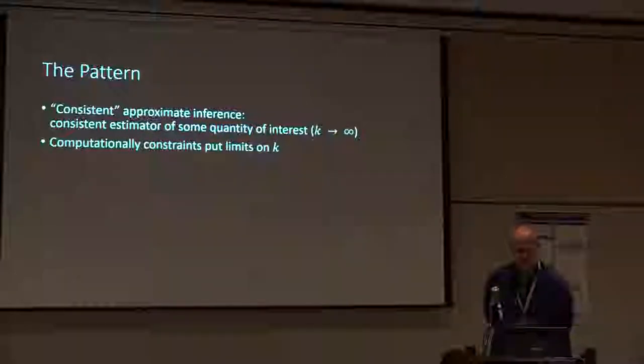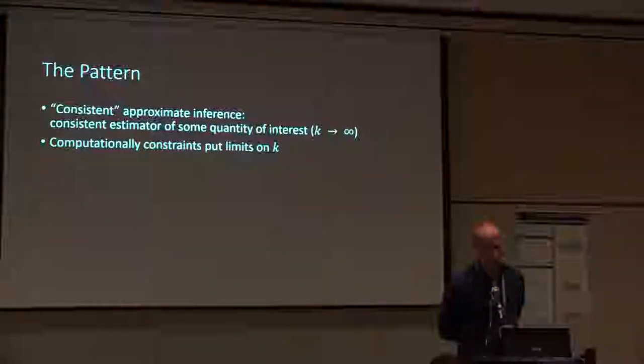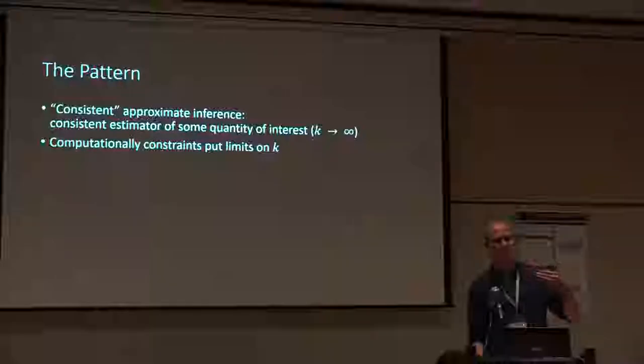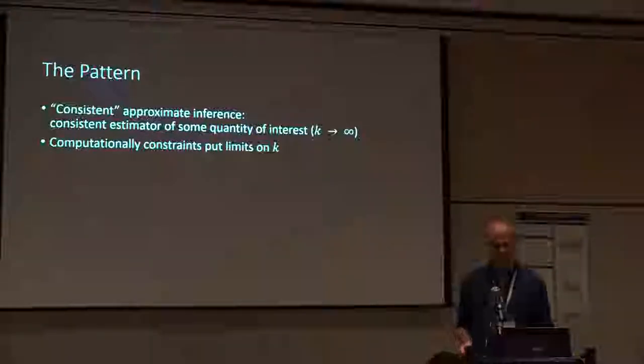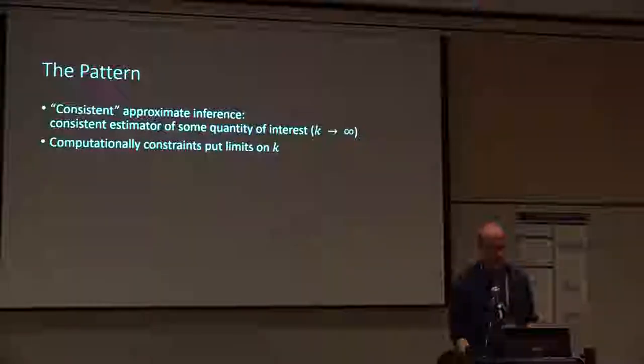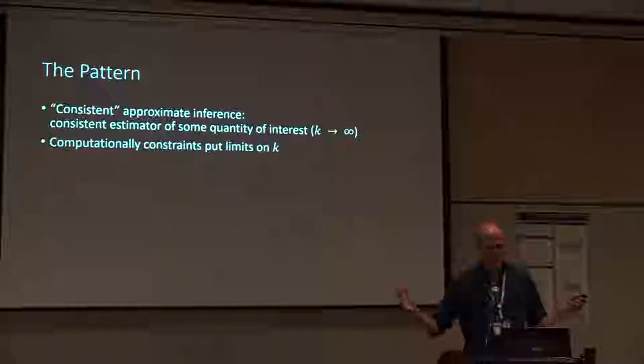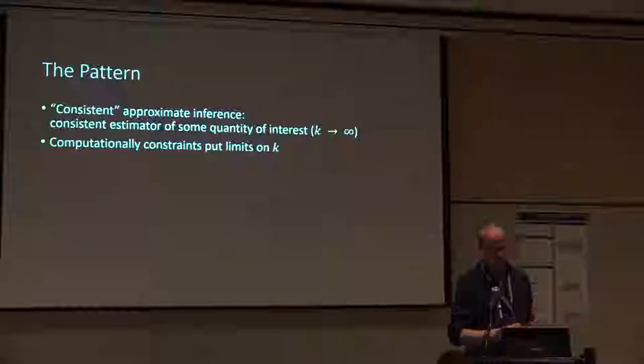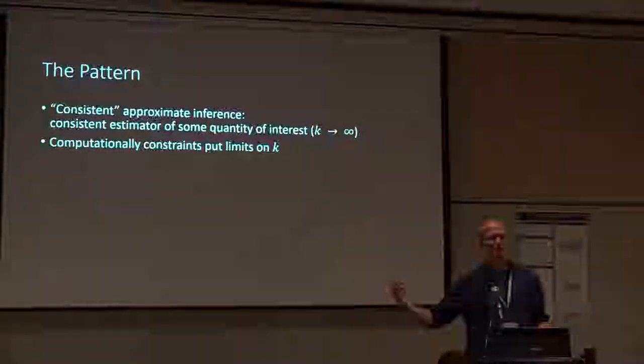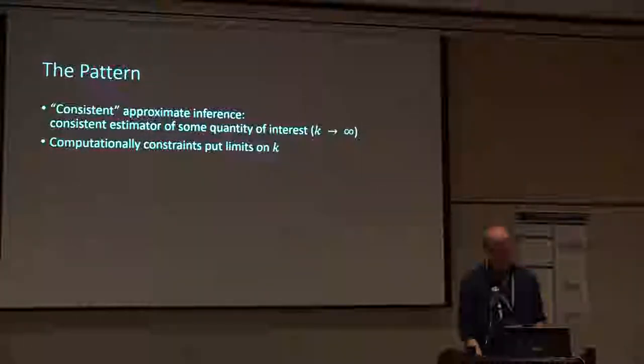So what's the pattern? The pattern is that we have approximate inference methods, many approximate inference methods, which are consistent. This means that if I have some quantity k, for example number of particles, number of MCMC iterations, or the number of samples that I take in an ELBO. When I take this parameter k to infinity, I have some asymptotic proof that I come out with the right thing. And the only thing that constrains me is my computational limitations on this parameter k.